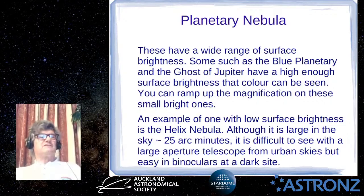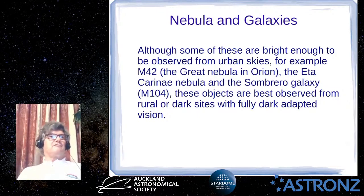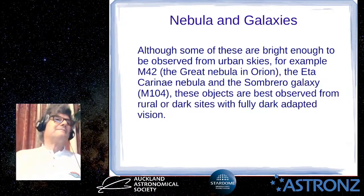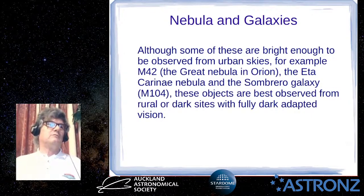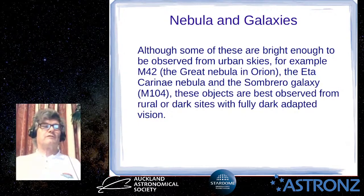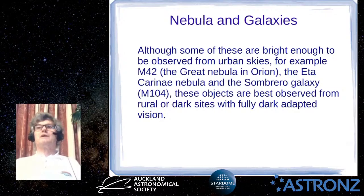Planetary nebulae are listed separately because they're one of the few objects besides stars where you can actually see color. Nebulae and galaxies generally have lower surface brightnesses, though there are brighter exceptions: Messier 42, the Great Nebula in Orion, is visible from urban skies; the Eta Carinae Nebula has a high surface brightness; and the Sombrero Galaxy is visible from Stardome because of its relatively high surface brightness. Generally though, for these objects dark skies give the best results — get out to a rural or dark-sky site.